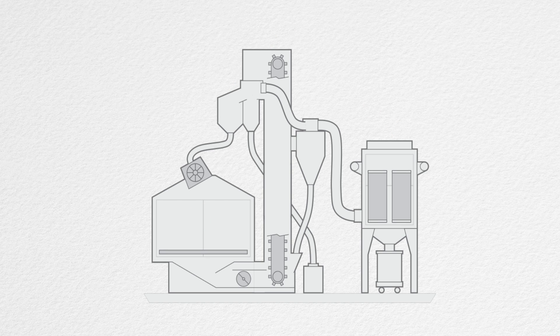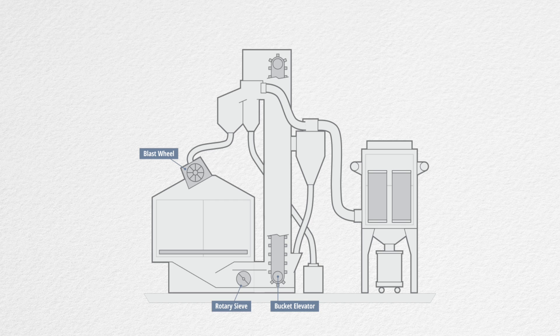The component breakdown includes a blasting wheel, a rotary sieve, bucket elevator, and the dust collector, which also creates an internal vacuum, helping the reclaimed system's air wash and cyclone to function.